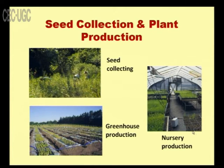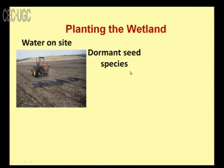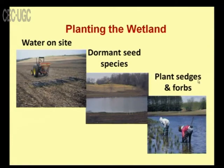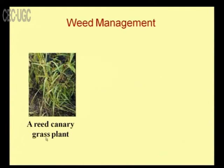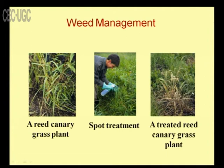Dormant seed species and plant sedges and forbs are planted on site. Weed management is critical — a reed canary grass is an example of a weed that must be managed through spot treatment. Wetlands support particular native plants, and weeds must be cleared through proper weed management to preserve the ecosystem.